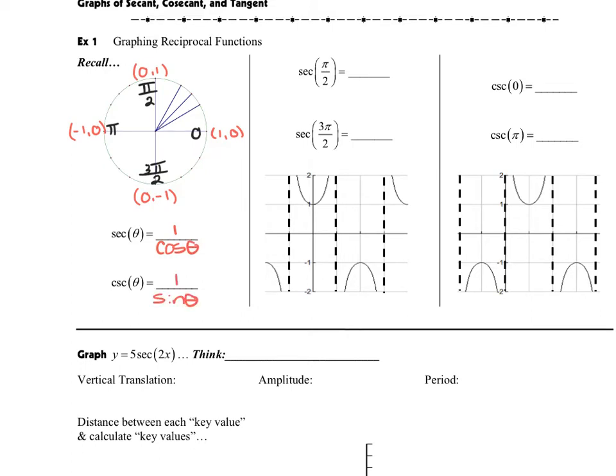So secant is the same as 1 over cosine theta, and cosecant is 1 over sine theta. When we do the reciprocal, remember, we're just turning that expression upside down. And when we were working with our unit circle, what we understood is there were places where secant and cosecant were undefined, and those were undefined because of these zeros that we have around our unit circle.